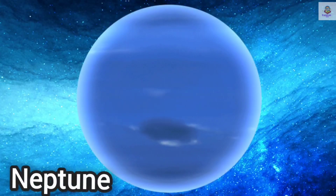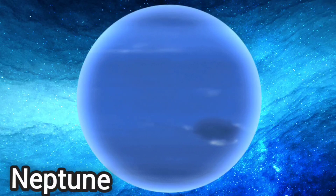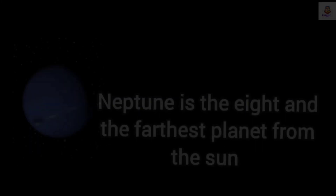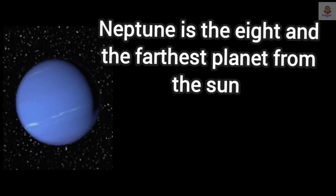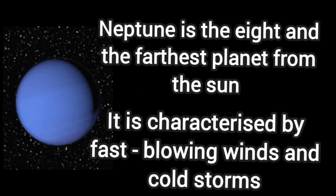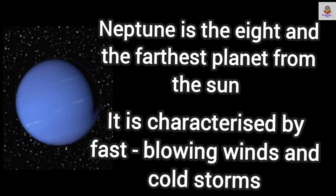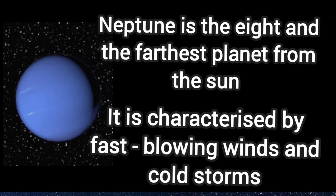Neptune. Neptune is the eighth and farthest planet from the sun. It is characterized by fast blowing winds and cold storms.